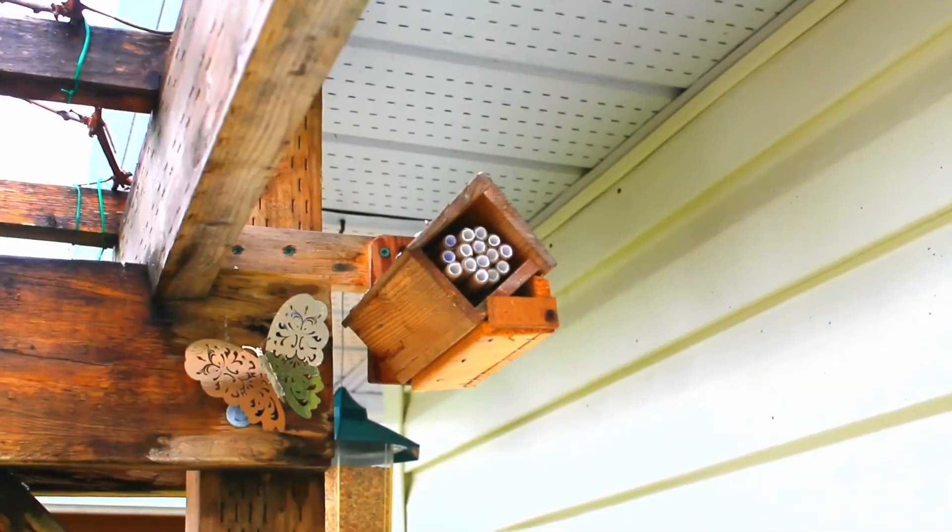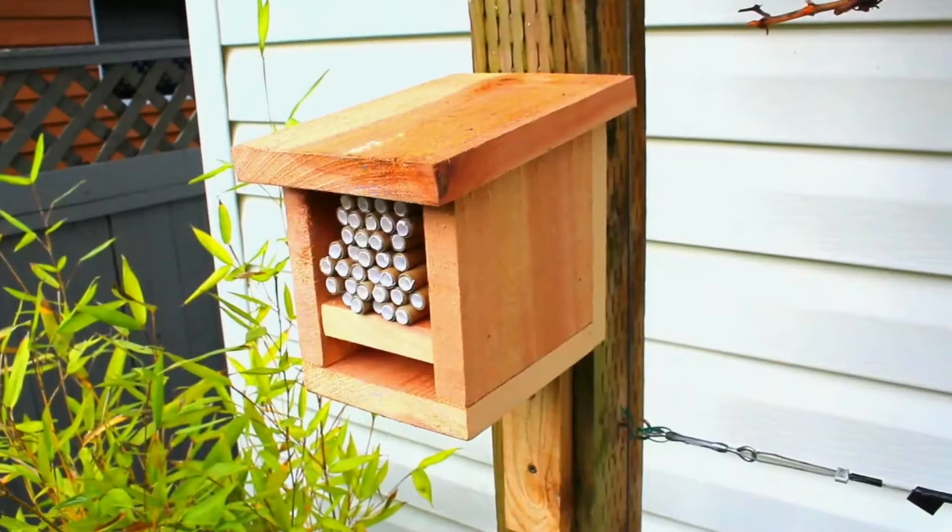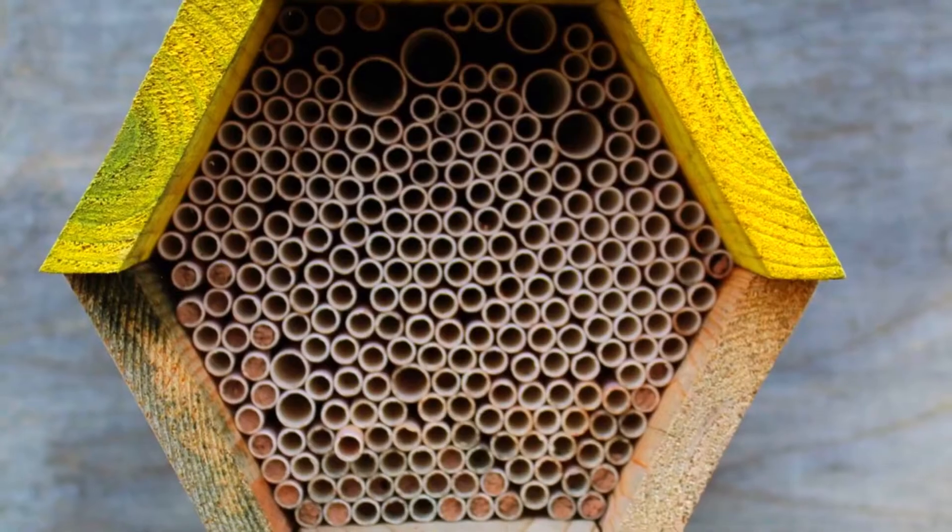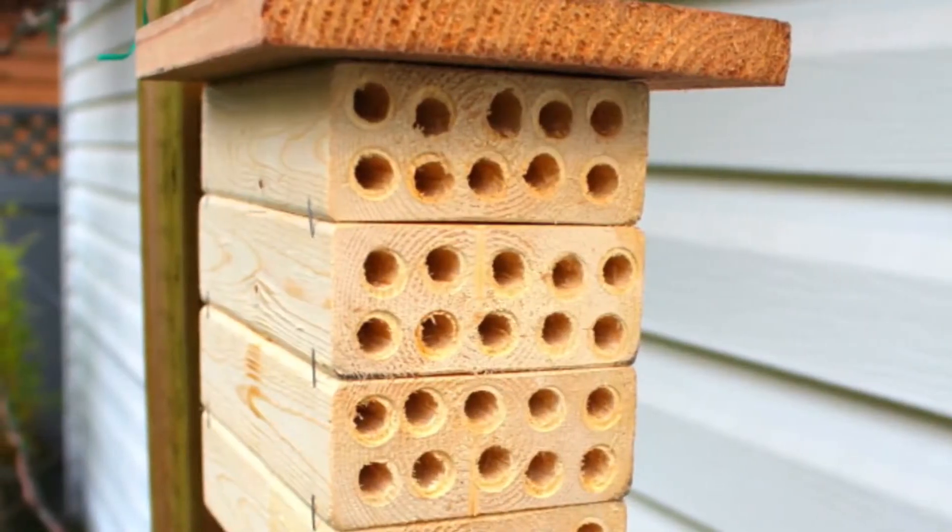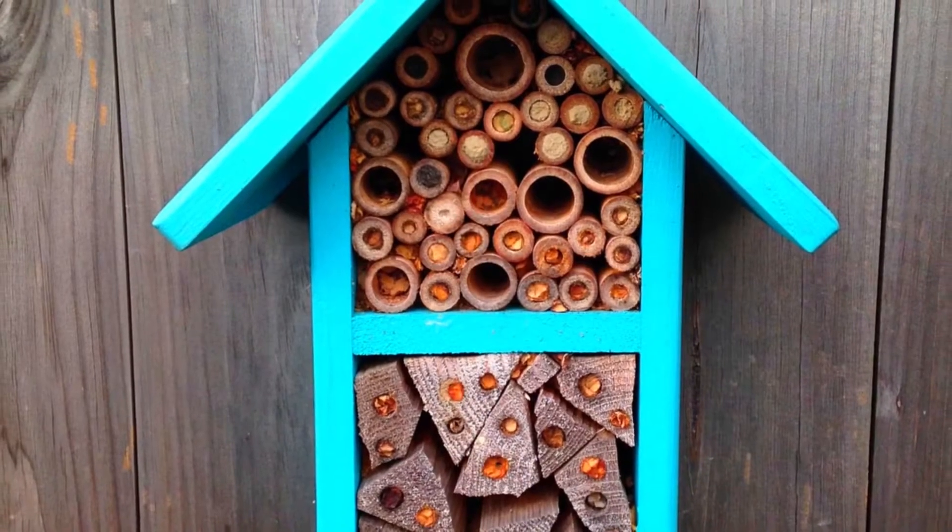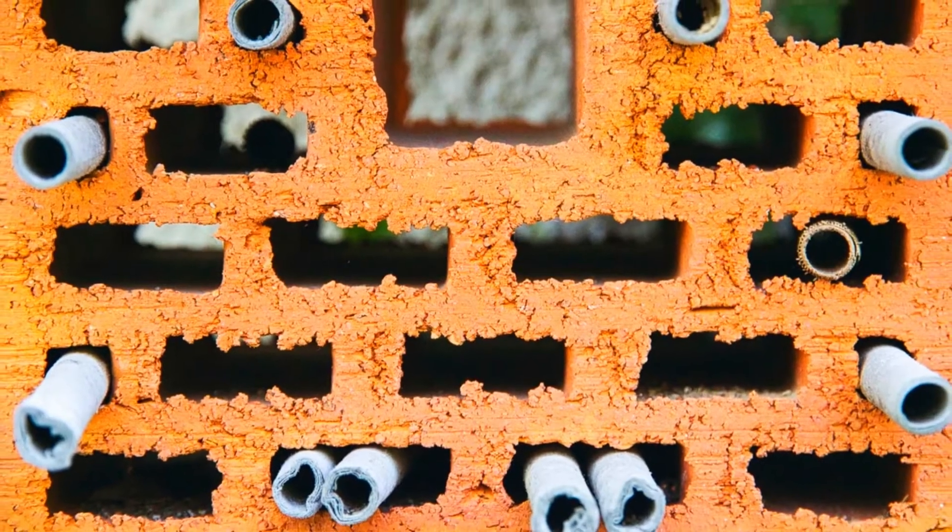A mason bee house is a simple structure that holds either tubes or trays or has cavities cut directly into it. They can be purchased at a store or you can make one at home. There are endless designs and materials to choose from.